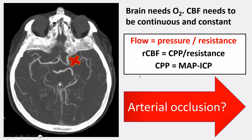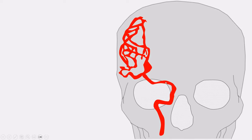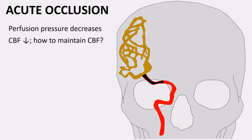So what happens if you have an arterial occlusion? Here we have the internal carotid artery and the right middle cerebral artery supplying the territory of the middle cerebral artery. If a patient has an occlusion of the main branch of the middle cerebral artery, the territory of the middle cerebral artery gets less blood. The perfusion pressure will decrease, and because the perfusion pressure decreases, flow decreases. We have less blood flow through this area because flow is pressure divided by resistance.